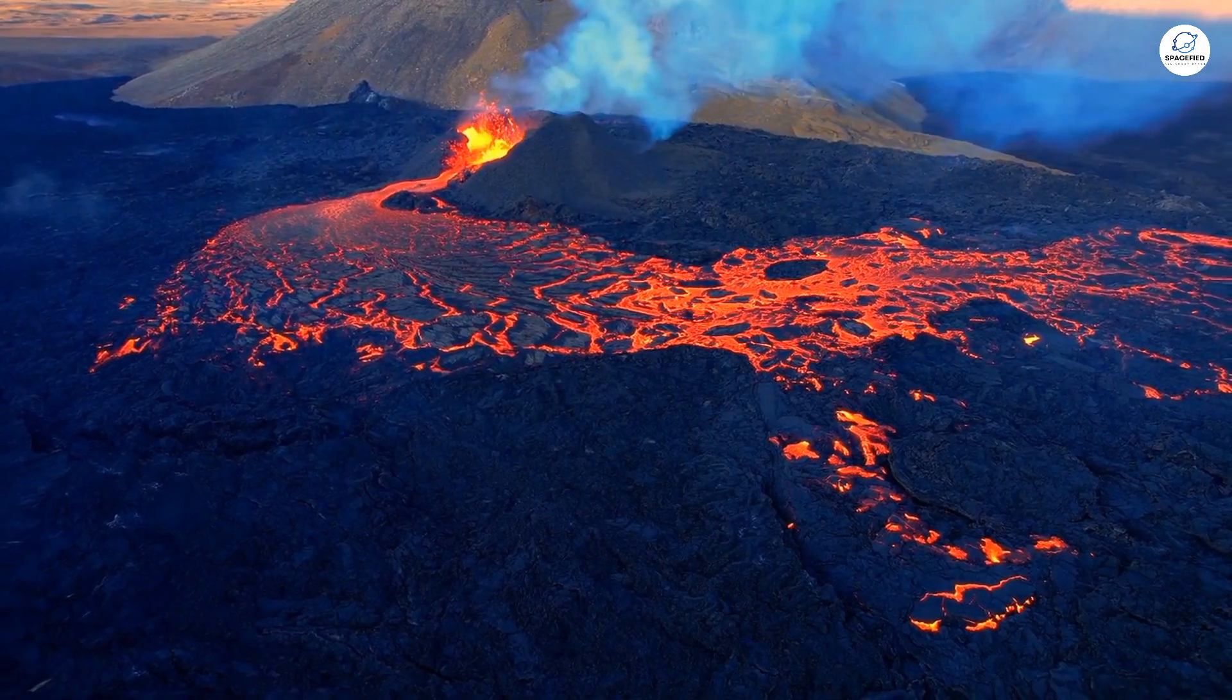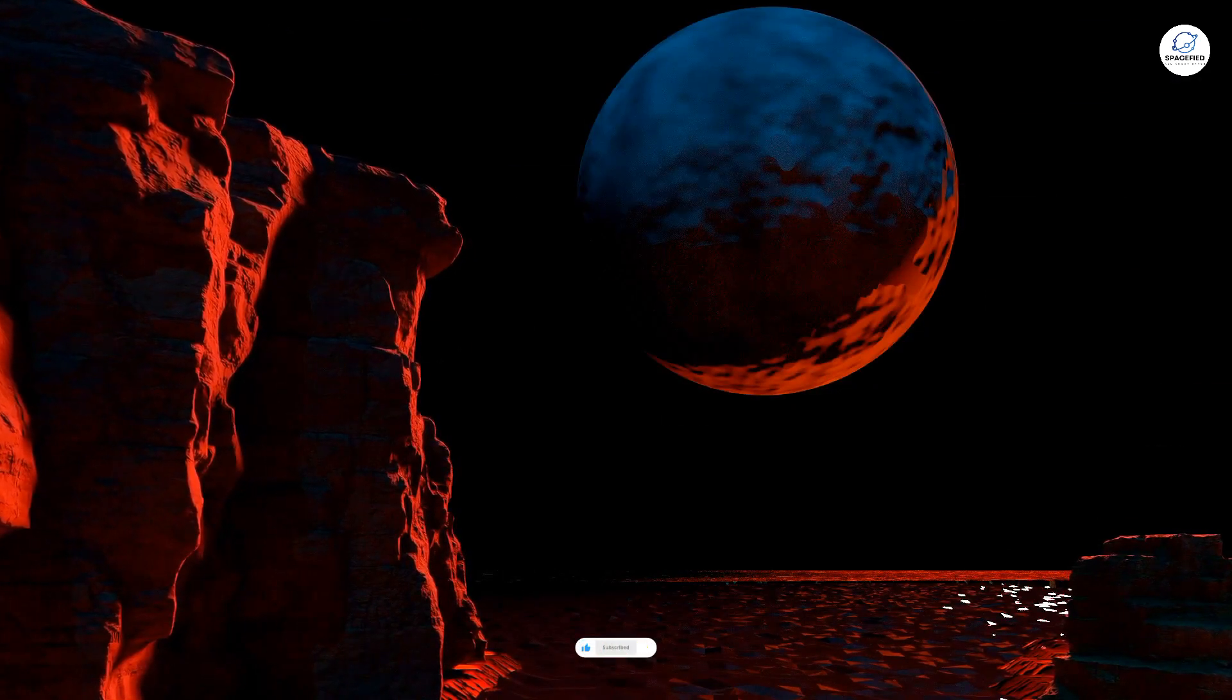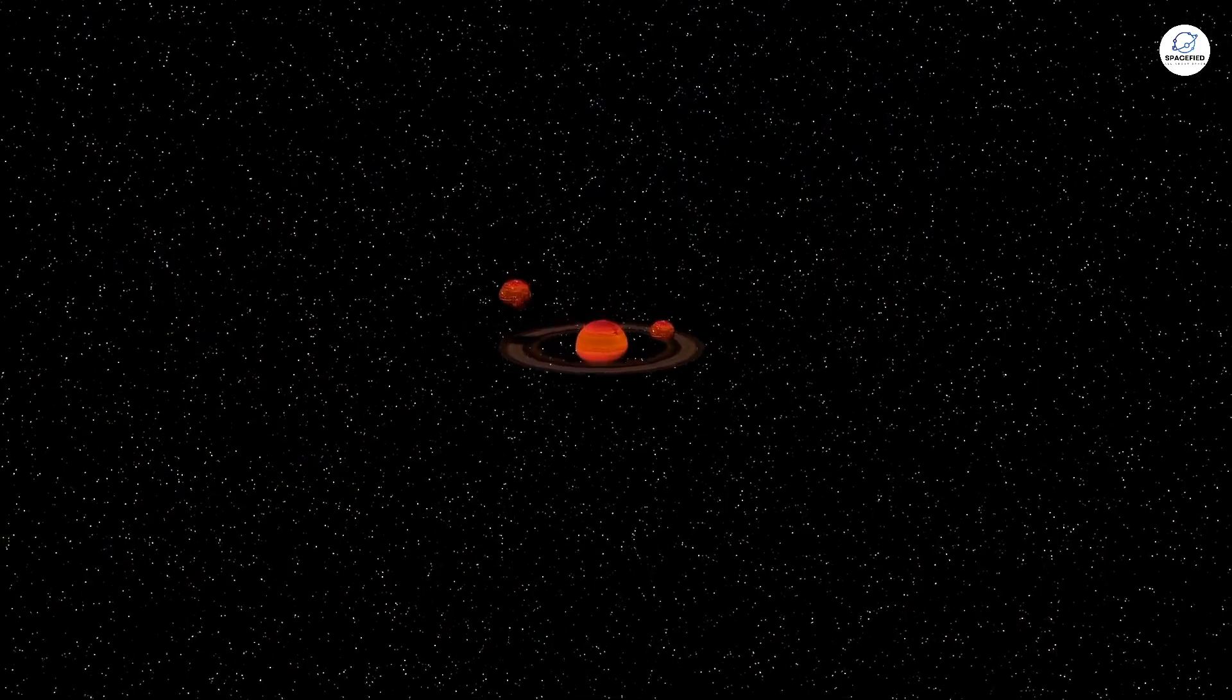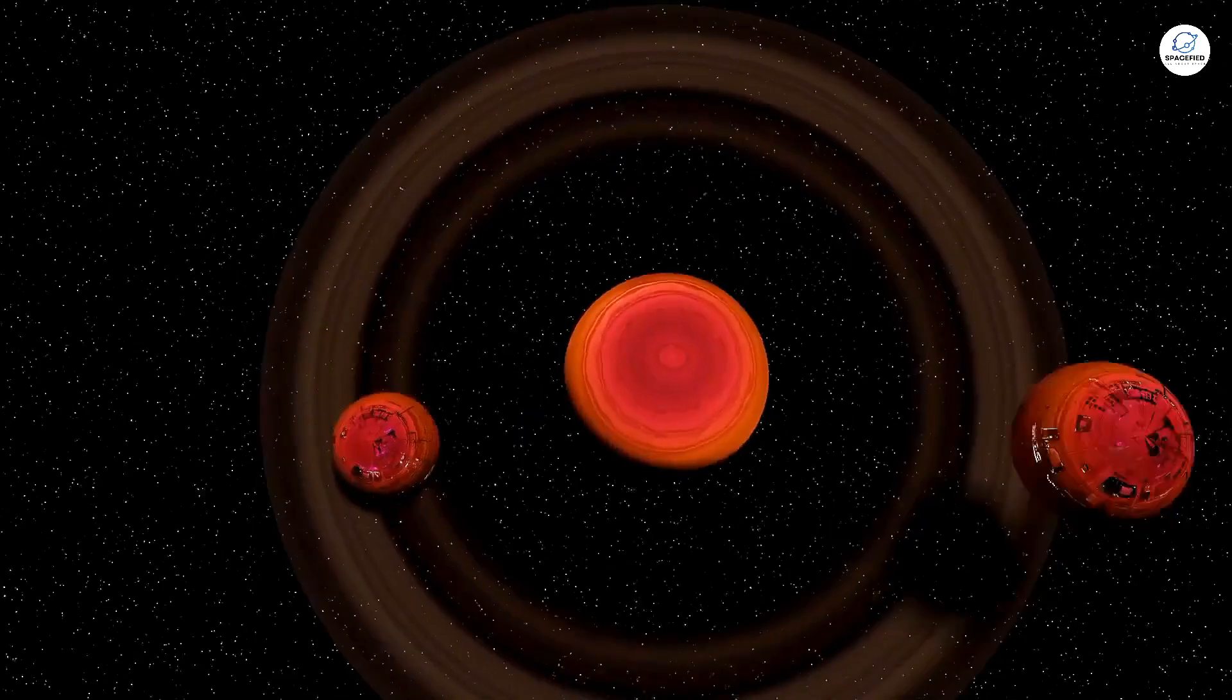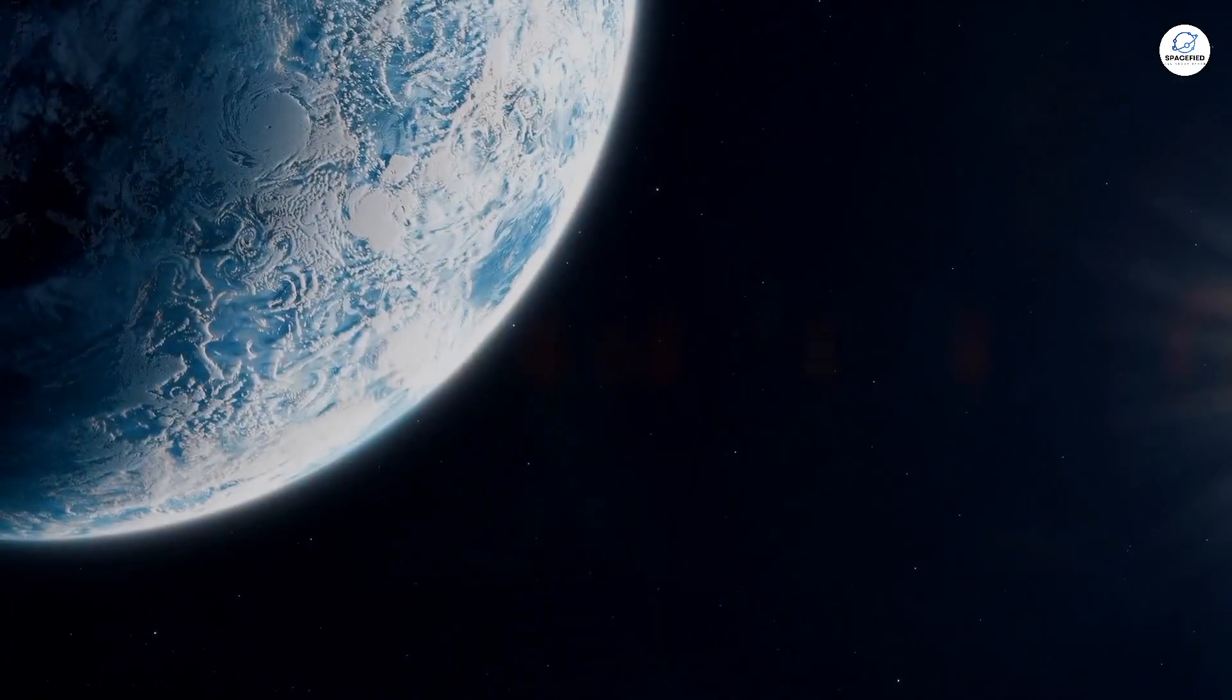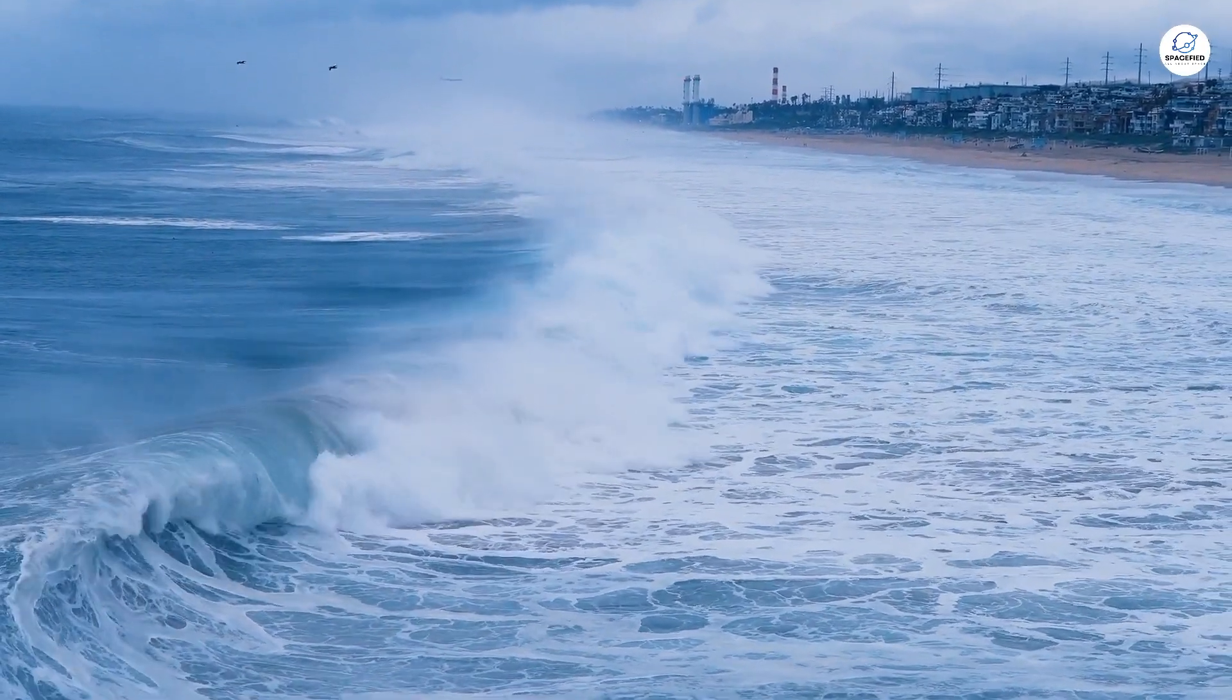This gives its lava oceans a bright red hue, making it look like something straight out of a sci-fi horror movie. Scientists believe Kepler 10b's extreme heat comes from close orbit around its star, which it completes in just 20 hours. It's a hellish world that makes even the most extreme environments on Earth seem tame by comparison.